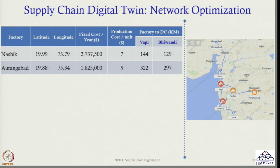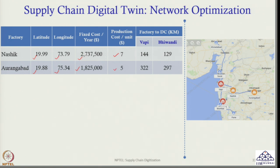For that I need data. First I need the latitude and longitude of the Nasik factory and the Aurangabad factory. I also need the fixed cost per year — for Nasik it is one value, for Aurangabad another. I also need production cost per unit: in Nasik it is 7 dollars per unit, in Aurangabad it is 5 dollars per unit. I also need to find out the distance from both factories to both DCs: Nasik to Vapi is 144 km, Nasik to Vivandi is 129 km, Aurangabad to Vapi is 322 km, and Aurangabad to Vivandi is 297 km.